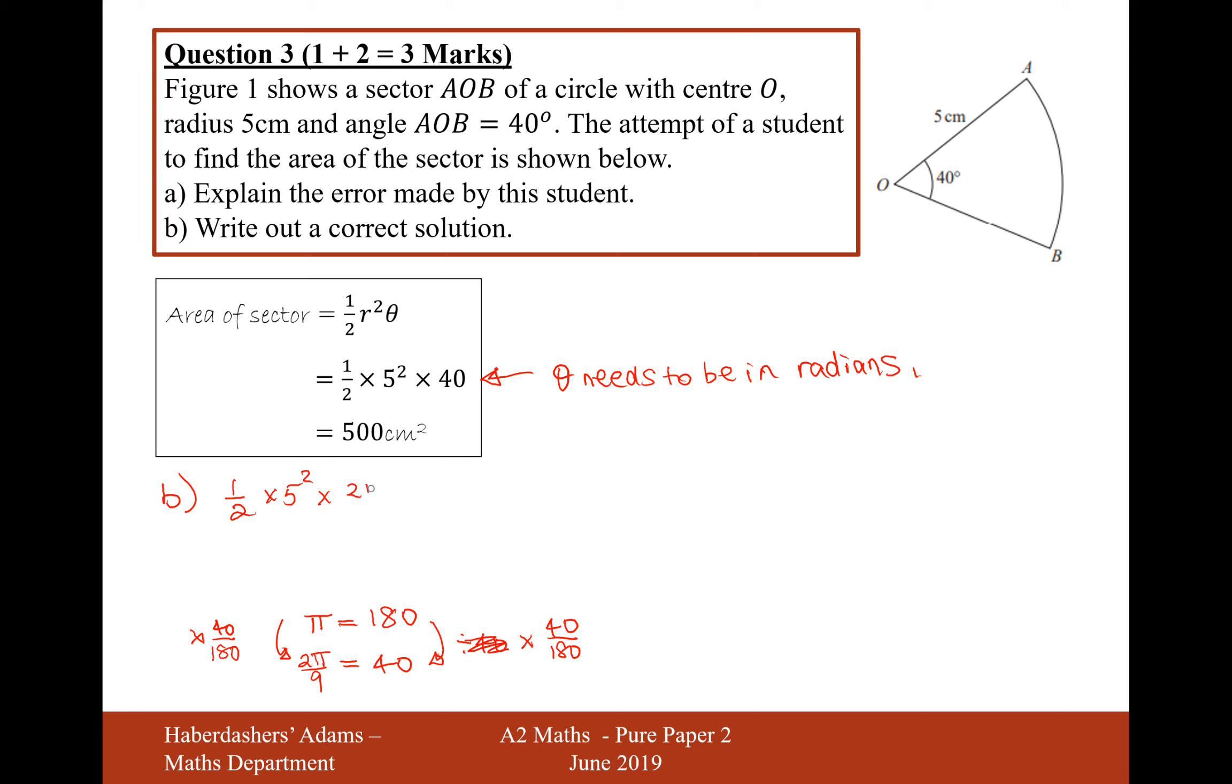So 2 pi by 9 is the angle of 40 in radians. Now if I grab my calculator and work that out, it's going to be 25 pi by 9. And there we are. That, as a final answer, is the answer to question B.